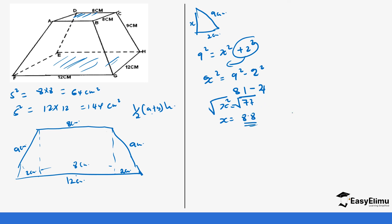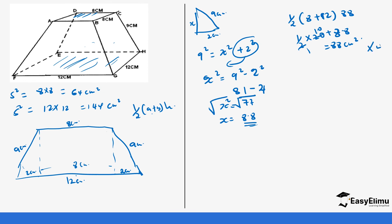So 8.8 is our height. Now we calculate the area of the trapezium: one half times bracket 8 plus 12 times height 8.8. That is one half times 20 times 8.8, which gives us 88 centimeters squared. This is for just one trapezium. Since we have four faces, it's going to be 88 times 4, which gives us 352 centimeters squared.